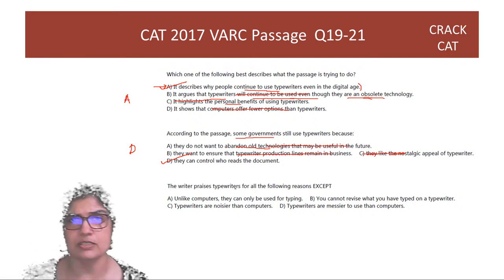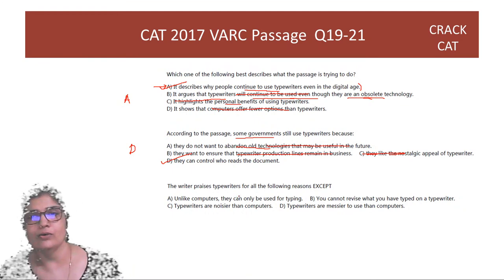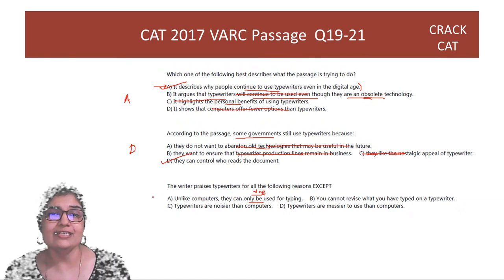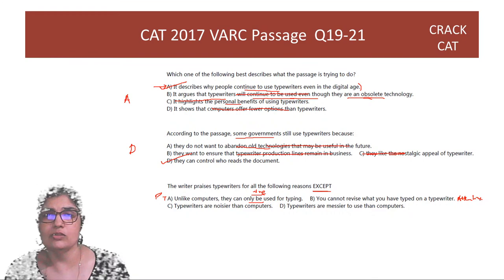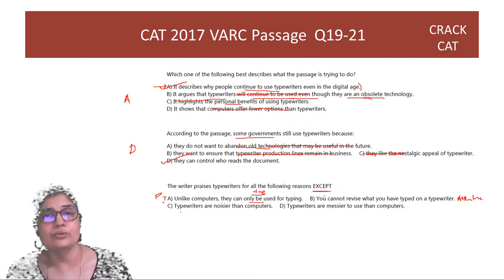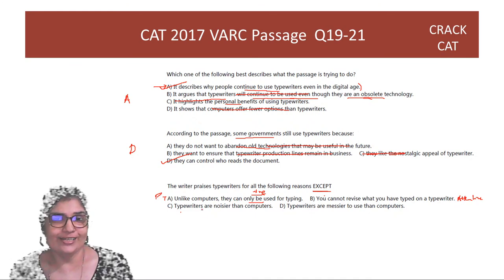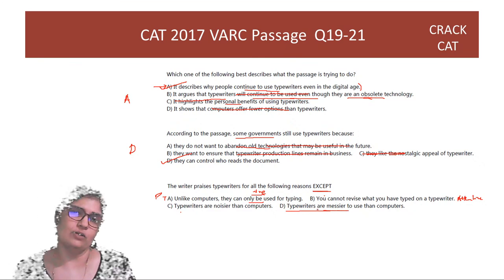Question: The writer praises typewriters for all of the following except — let's check. Option A: they can only be used for typing — positive because no internet distractions, so that's praise. Option B: you cannot revise what you've typed — this encourages attentiveness, also praise. Option C: typewriters are noisier — the encouraging clack of keys is also mentioned as a positive. Option D: messiness — only a ribbon is mentioned, but messiness being useful is not mentioned. So the answer is option D.